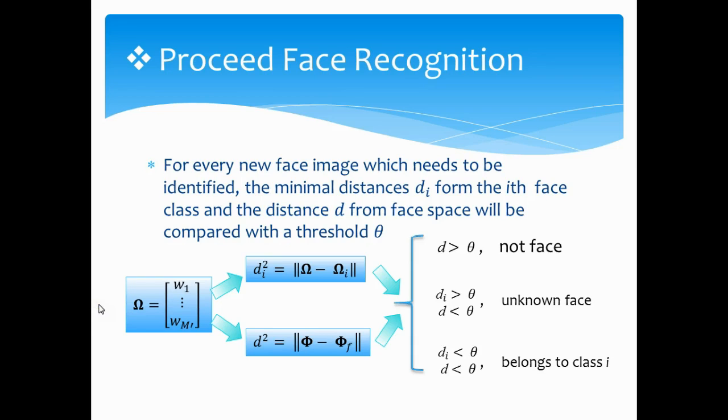For every new face image which needs to be identified, the minimal distance DI from the face class and the distance D from face space will be compared with the threshold theta. If D is larger than theta, the image will be recognized as an image containing no human faces. If the distance from face space is smaller than theta, while the minimal distance DI is larger than theta, then the face will be classified as an unknown face image. And if DI and D are both smaller than theta, then the new face image belongs to class I.